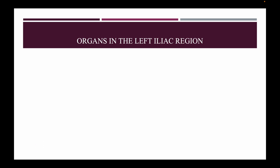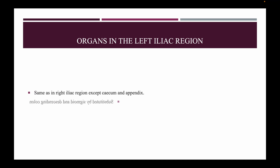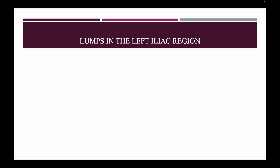Organs in the left iliac region are the same as in the right iliac region, except the cecum and appendix, which are substituted by the sigmoid colon and descending colon. Lumps in the left iliac region — in the sigmoid colon: diverticular colitis and carcinoma.